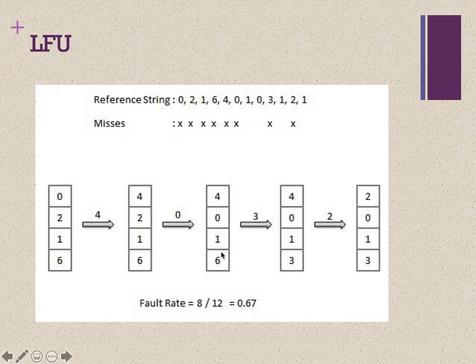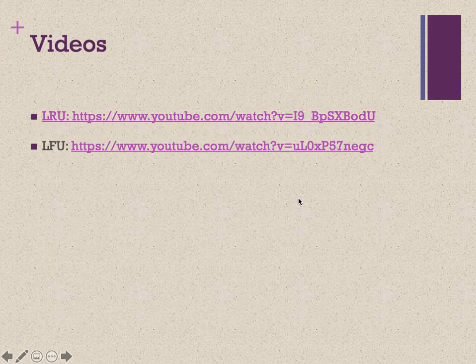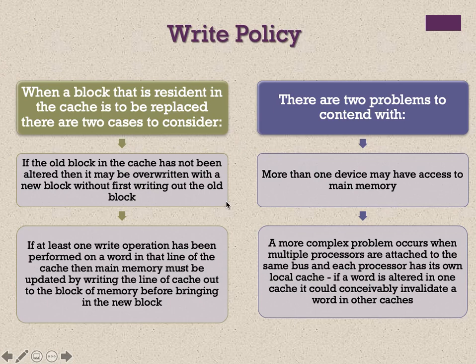Number 6 is replaced rather than number 1 since number 1 was recently used. Then when 2 arrives, we replace number 4 because number 4 was the least recently accessed. That demonstrates the Least Frequently Used technique. There are videos you can watch to understand these techniques further.